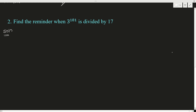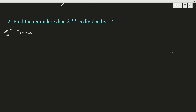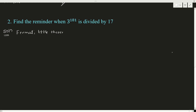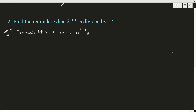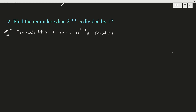For your understanding, I am going to write the formula — Fermat's Little Theorem. There are already videos on this concept, just go through them. The formula is: A raised to P minus 1 is congruent to 1 mod P. We use Fermat's Little Theorem when P is a prime number and GCD of A and P is equal to 1.